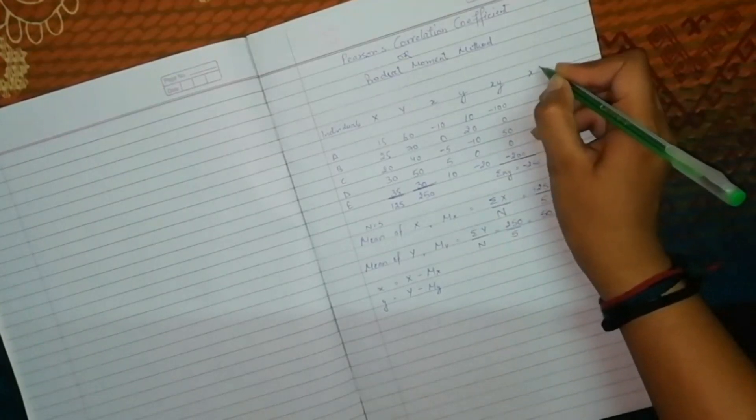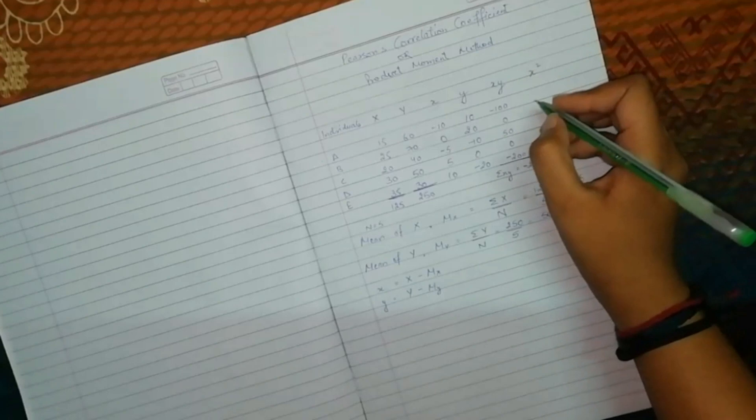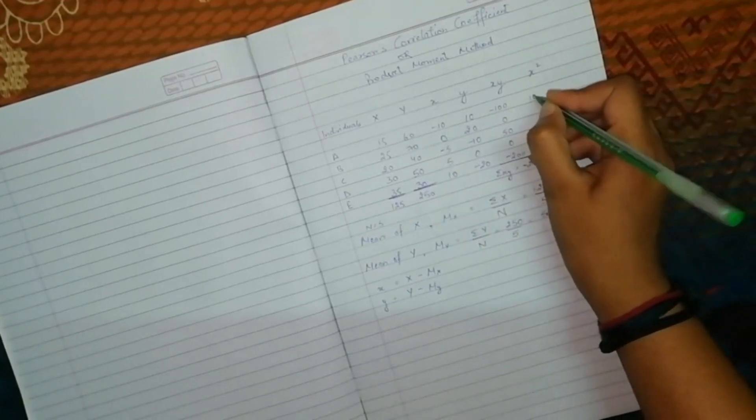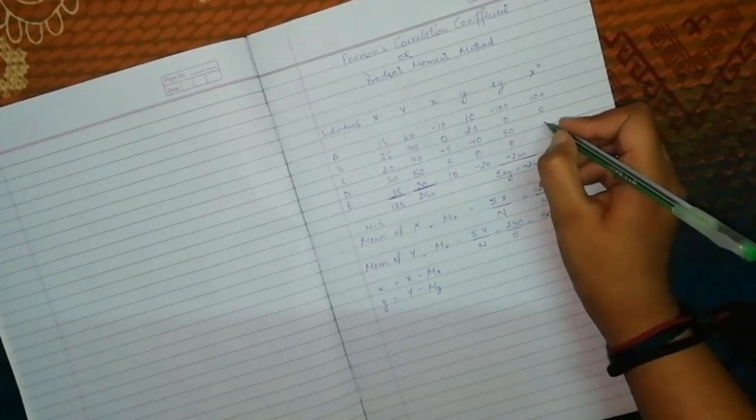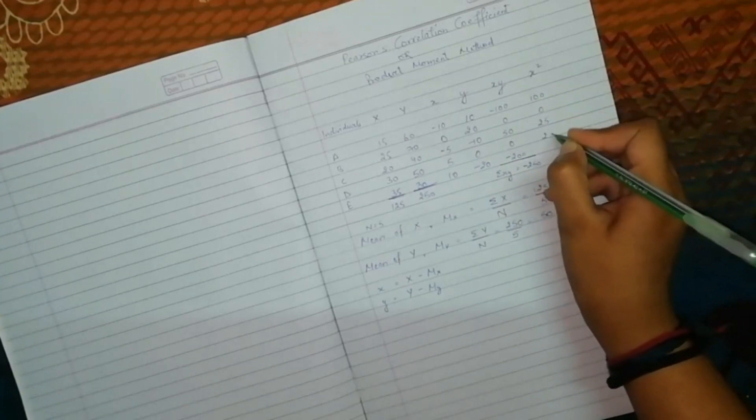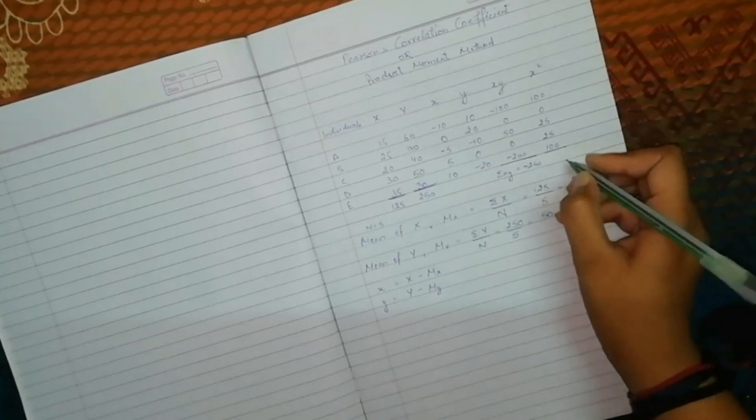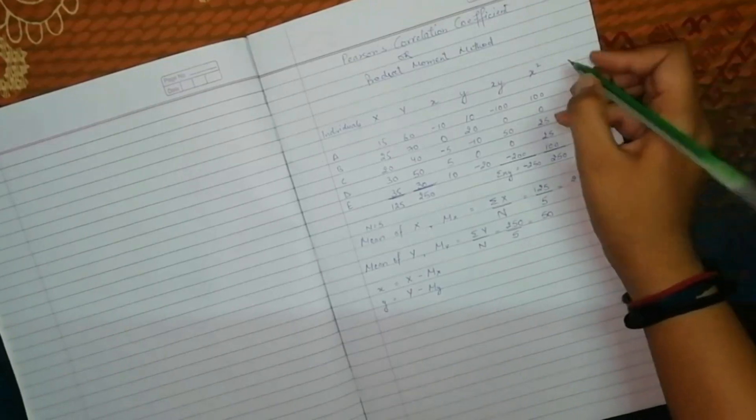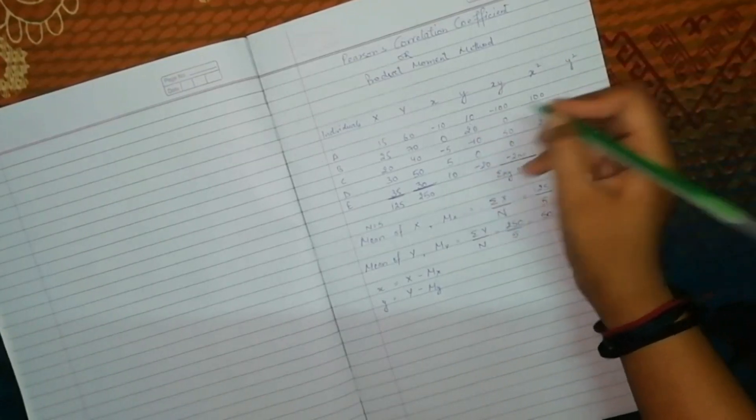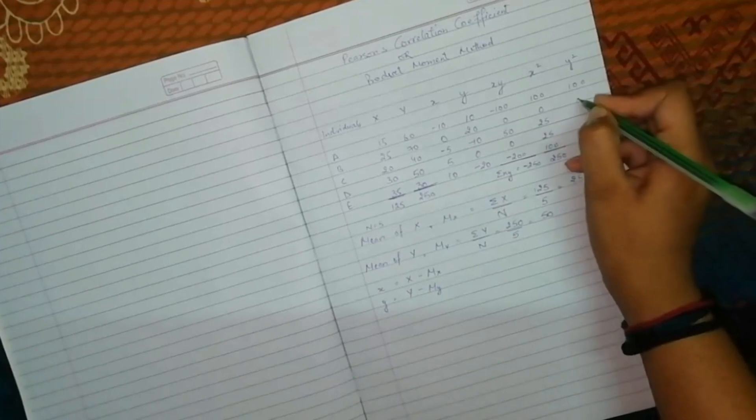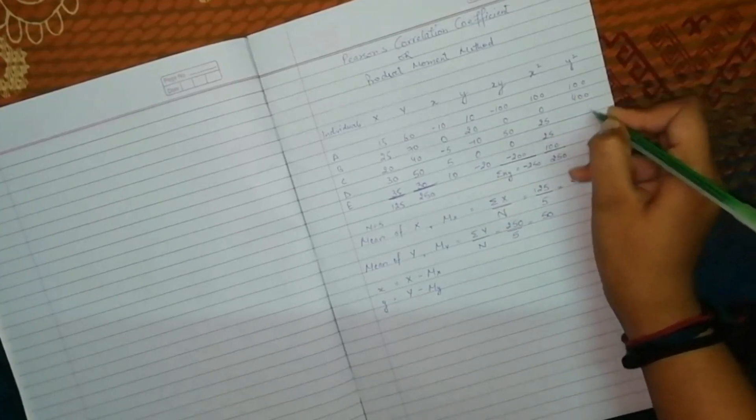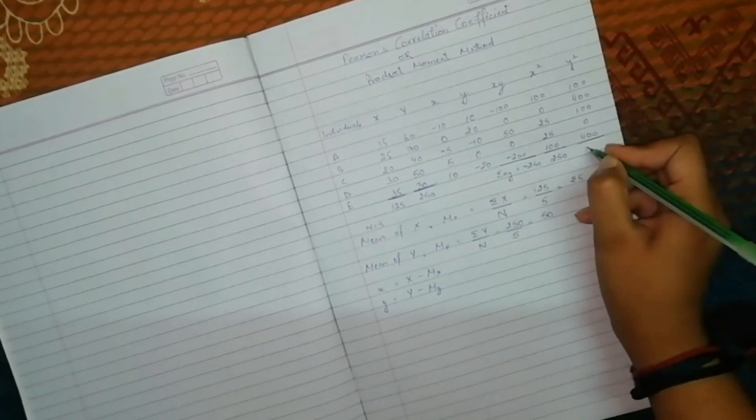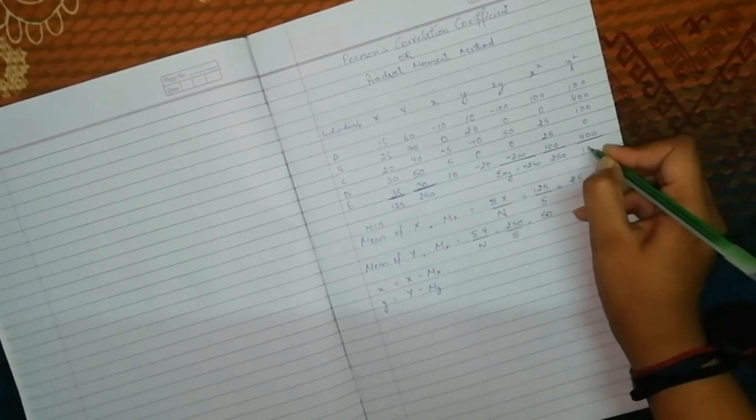Then, x square: minus 10 is 100, 0 is 0. Then, minus 5 squared is 25, 5 squared is 25, 10 squared is 100. And, this will be added. We add this, this is 250. Then, y square. Y square, here we have 100. Now, you have 100. Then again 100, 0, and 400. Total, 1000.